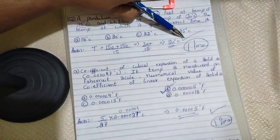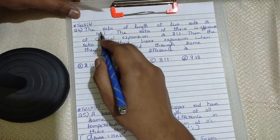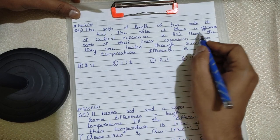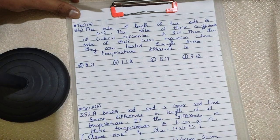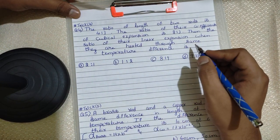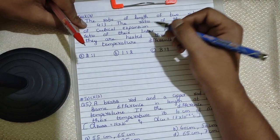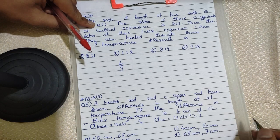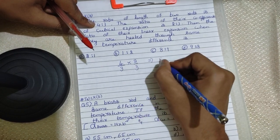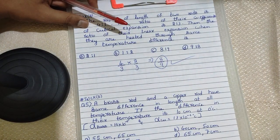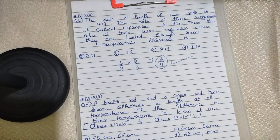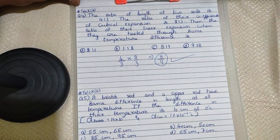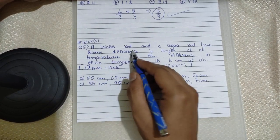Trick number 4: the ratio of the length of two rods is 4:3, the ratio of their coefficients of cubical expansion is 2:3. Find the ratio of their linear expansion when heated through the same temperature difference. Whenever you come across this type of model, just write down the ratios and multiply them: 4/3 multiplied by 2/3 gives 8/9. In just two seconds you get the answer.